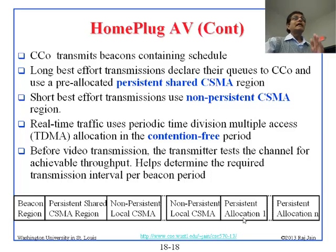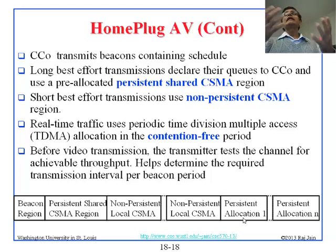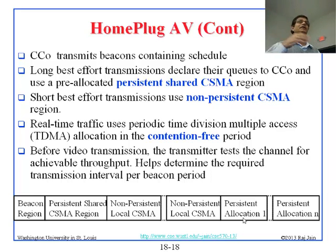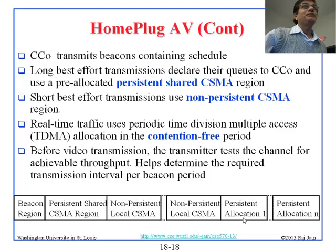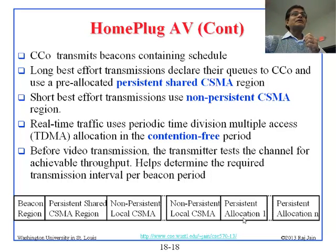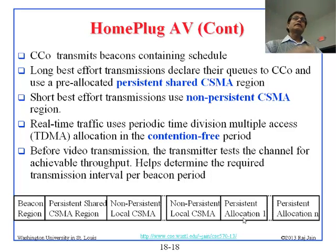Best-effort transmission uses non-persistent CSMA. Real-time traffic uses the contention-free period — persistent allocated. If you are watching a movie for an hour, the plug tells the controller it needs bandwidth for video, and the controller allocates you 5 milliseconds every cycle — that is your reserved slot. Before any contention-free transmission, you have to figure out how much time you need, which requires knowing your bandwidth. To figure that out you do sounding — you send something to measure how much noise there is and estimate how much bandwidth you have.